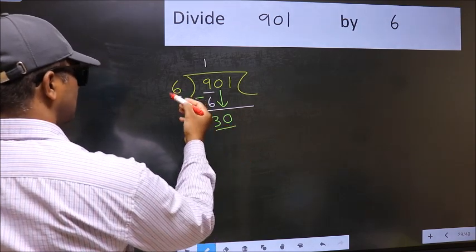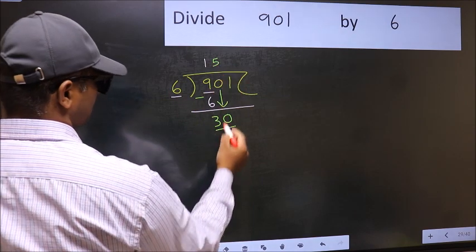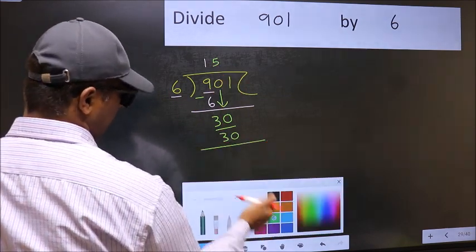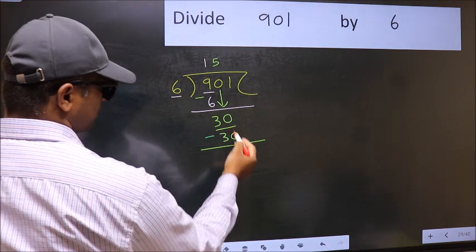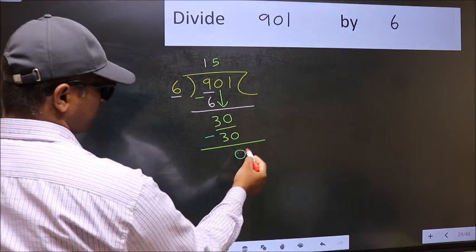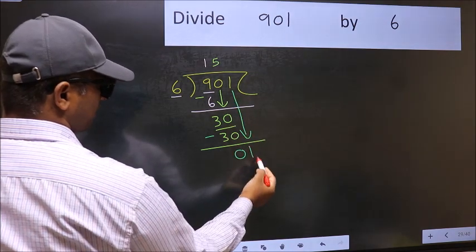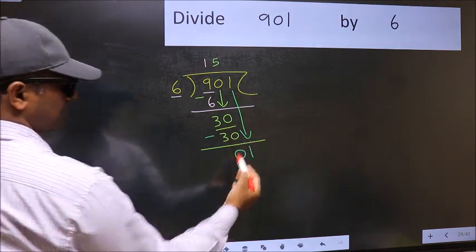When do we get 30 in 6 table? 6, 5 is 30. Now you should subtract. 30 minus 30, 0. After this, bring down the beside number.